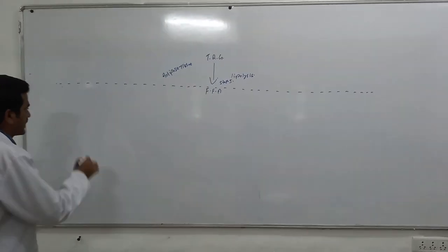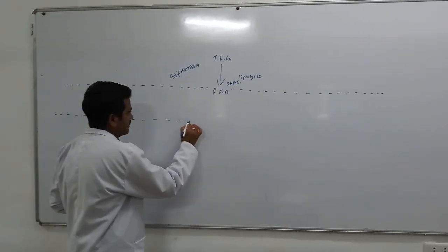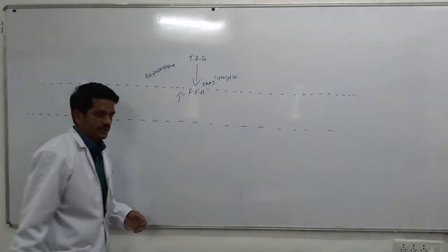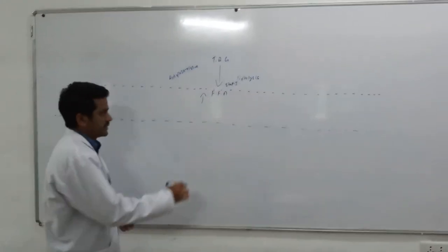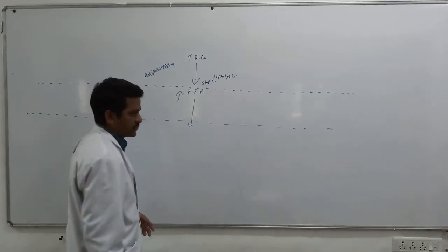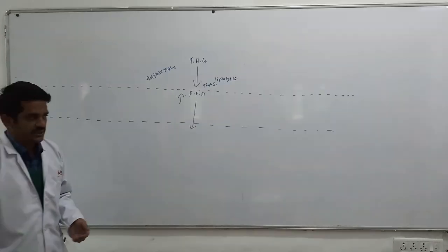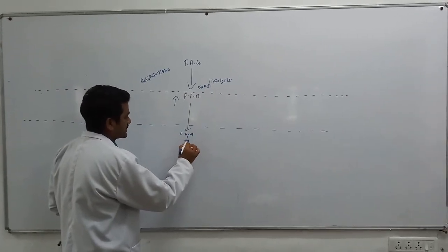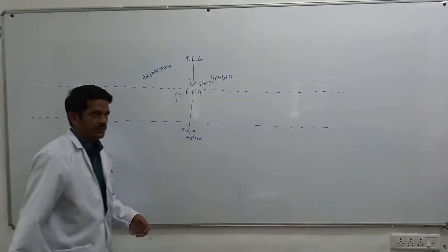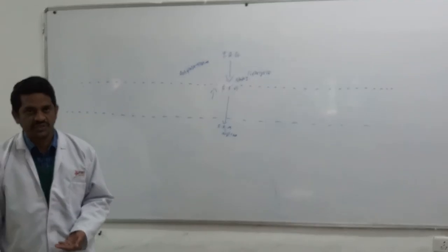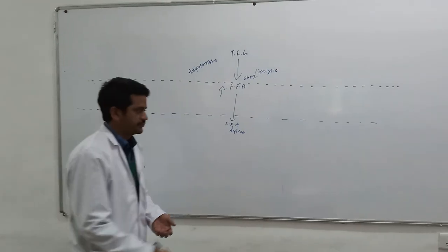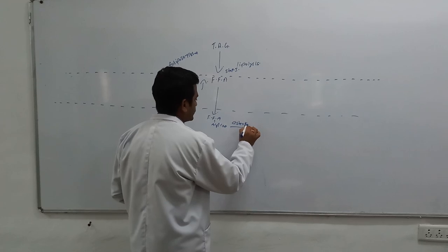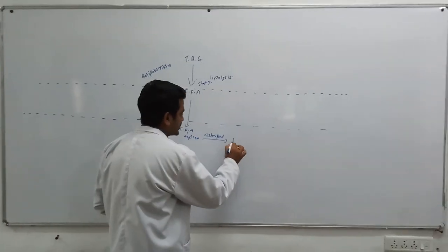These circulating free fatty acids are very high in the blood levels. When there is a high level of circulating free fatty acids, it crosses into the hepatocytes. These free fatty acids are activated into acyl-CoA. So, in the fed state, when you are taking food, it is esterified to triacylglycerols.